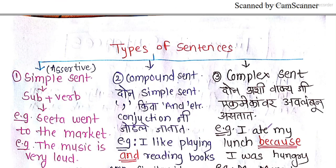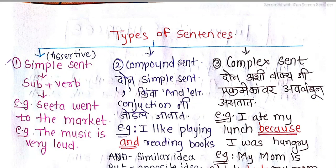Types of sentences — it's very easy. First, a simple sentence is an assertive sentence. When subject and verb are present, for example: 'I went to the market,' 'I didn't study at my school last night,' 'He is a guy.' In a simple sentence, the ending has a full stop.